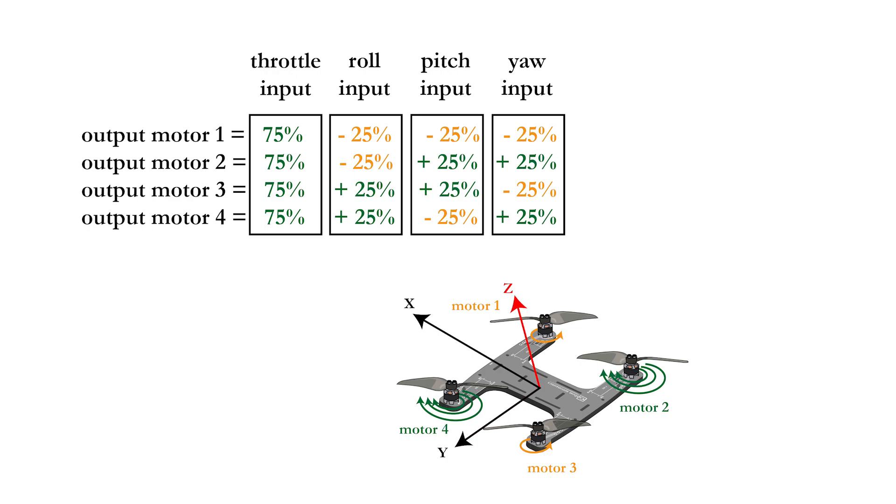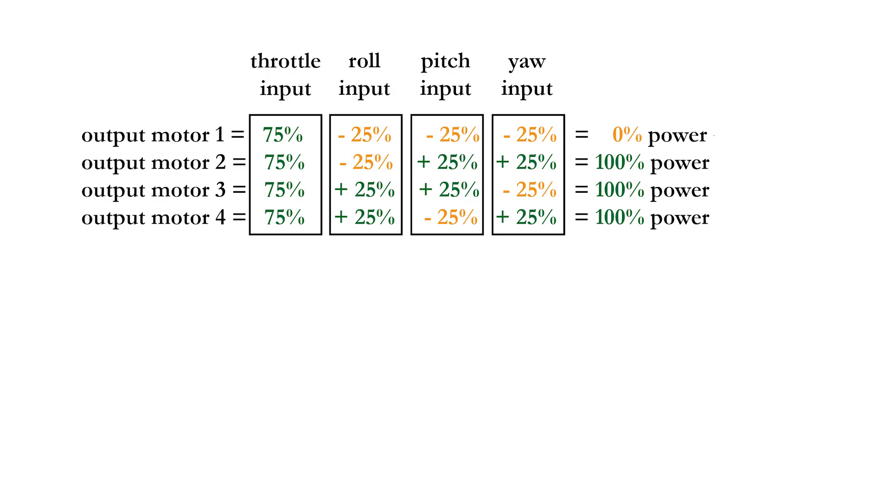Adding all these parts gives the necessary motor output when you want to increase altitude while simultaneously performing a roll, pitch, and yaw movement. The resulting motor output is very simple. Motor 1 shouldn't be powered while all other motors should be fully powered.